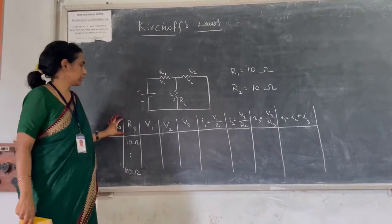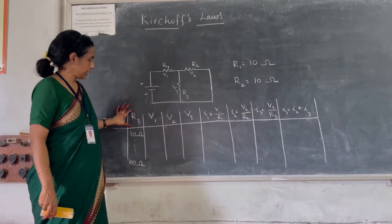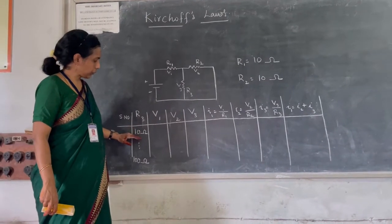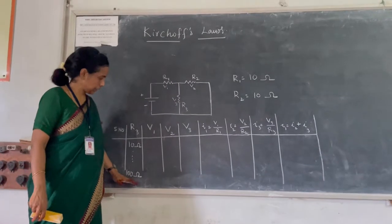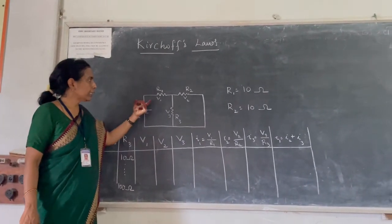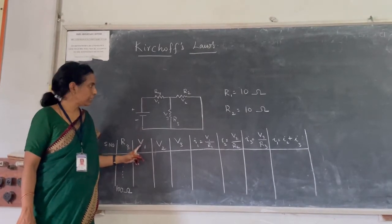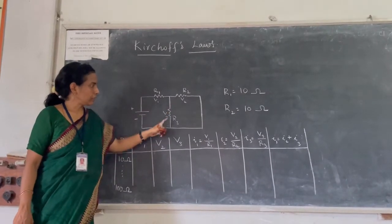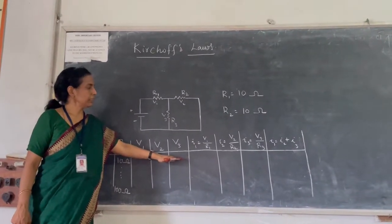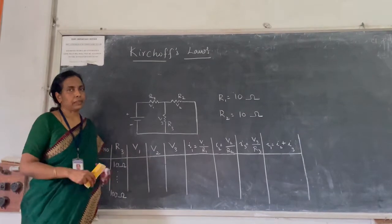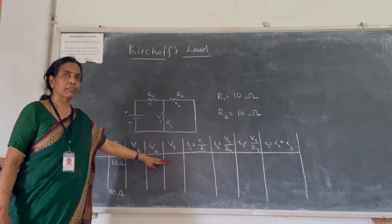By varying resistance R3 — 10 ohms, 20 ohms, 30 ohms, 40 ohms, 50 ohms, up to 100 ohms — we will note the voltage drop across R1 (V1), R2 (V2), and R3 (V3). We will note all the voltages using the multimeter.